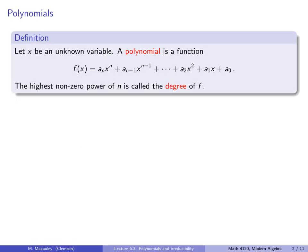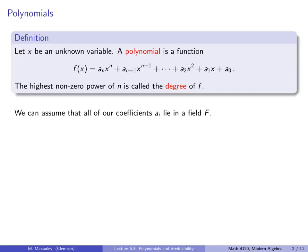Here is a definition that I am sure you know very well. Suppose x is an unknown variable, then a polynomial is a function f of x — it's an times x to the n, all the way down to a1 times x plus a0, nothing different than what you learned in calculus. The highest non-zero power n is called the degree of f. However, we can assume that all of our coefficients a_i lie in a field F.